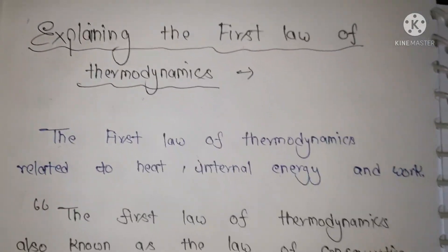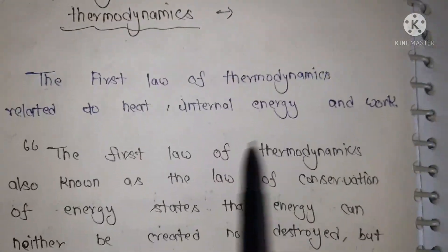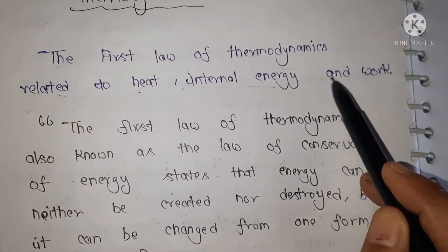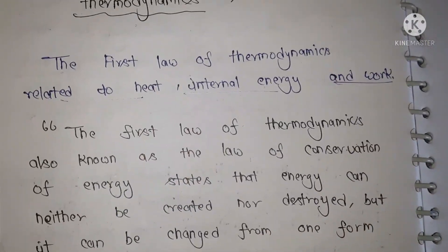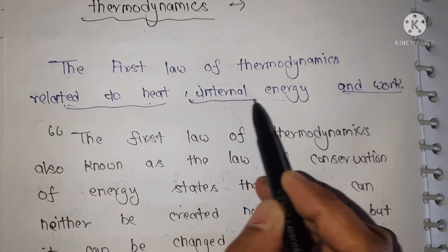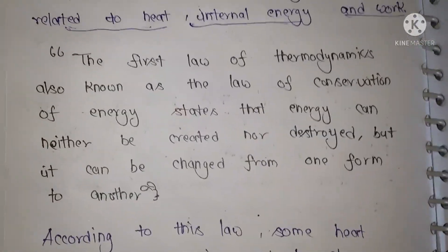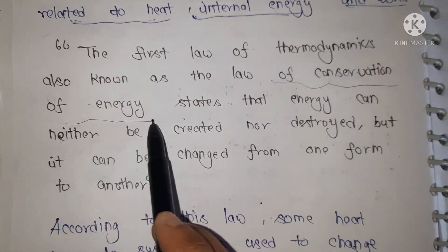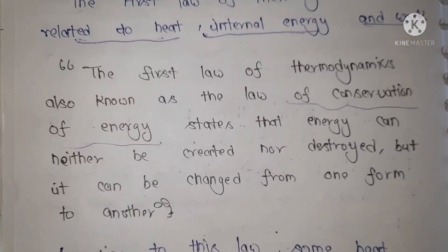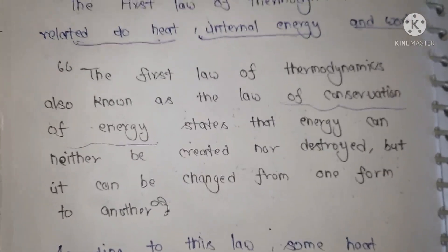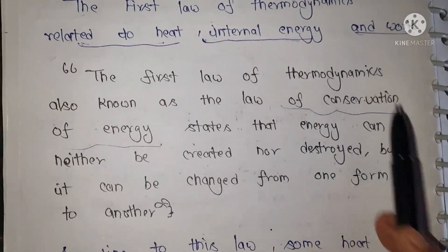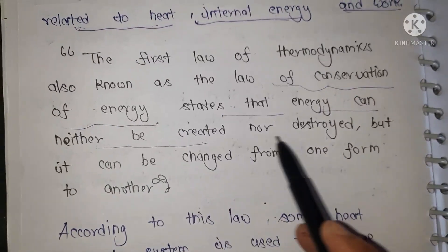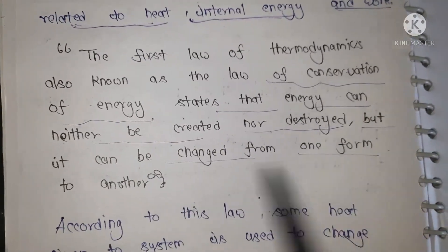Now, moving to the next point which is explaining the first law of thermodynamics. The first law of thermodynamics relates to heat, internal energy, and work. In this, we just know about heat, internal energy, and work. The main point is the first law of thermodynamics is also known as the law of conservation of energy. So in exam, maybe you will discuss the law of conservation of energy. You need to know that this is the first law of thermodynamics. It states that energy neither be created nor destroyed, but it can change from one form to another.